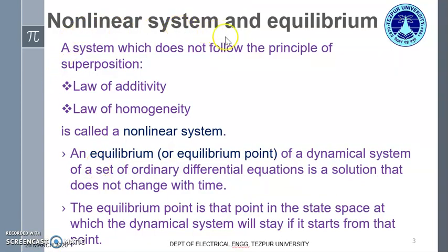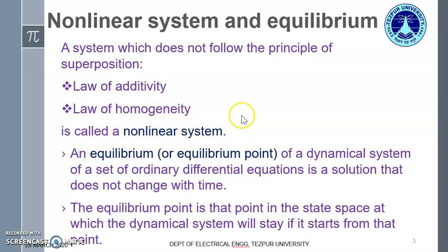We begin with nonlinear systems and equilibrium points. A system which does not follow the principle of superposition — that is, the law of additivity and the law of homogeneity — is called a nonlinear system. A linear system always follows the principle of superposition; a system which does not is a nonlinear system.